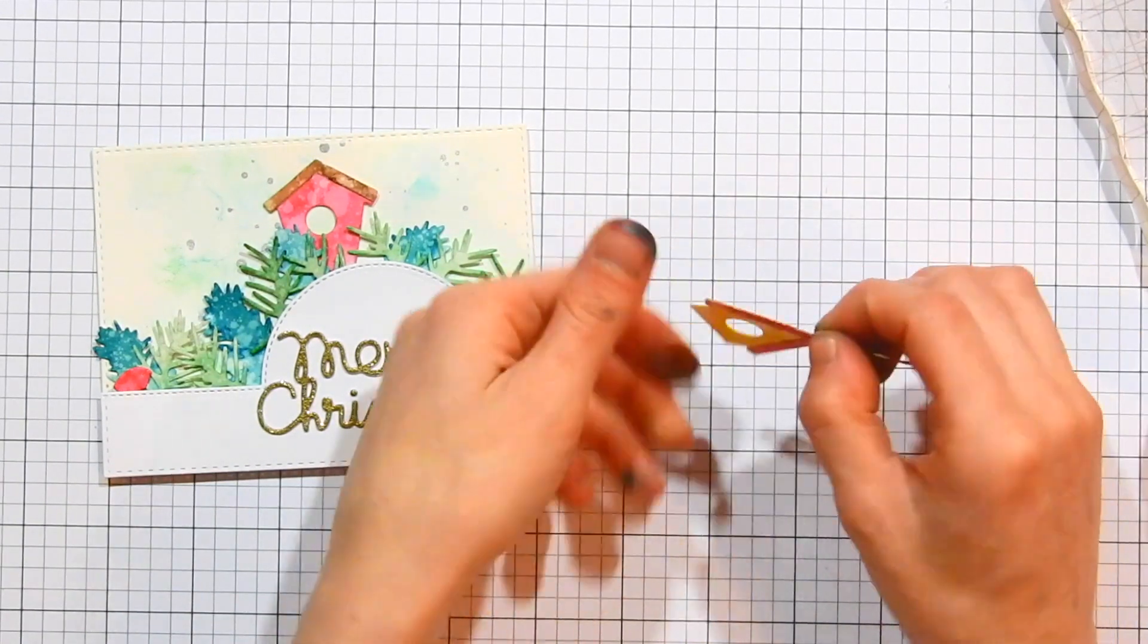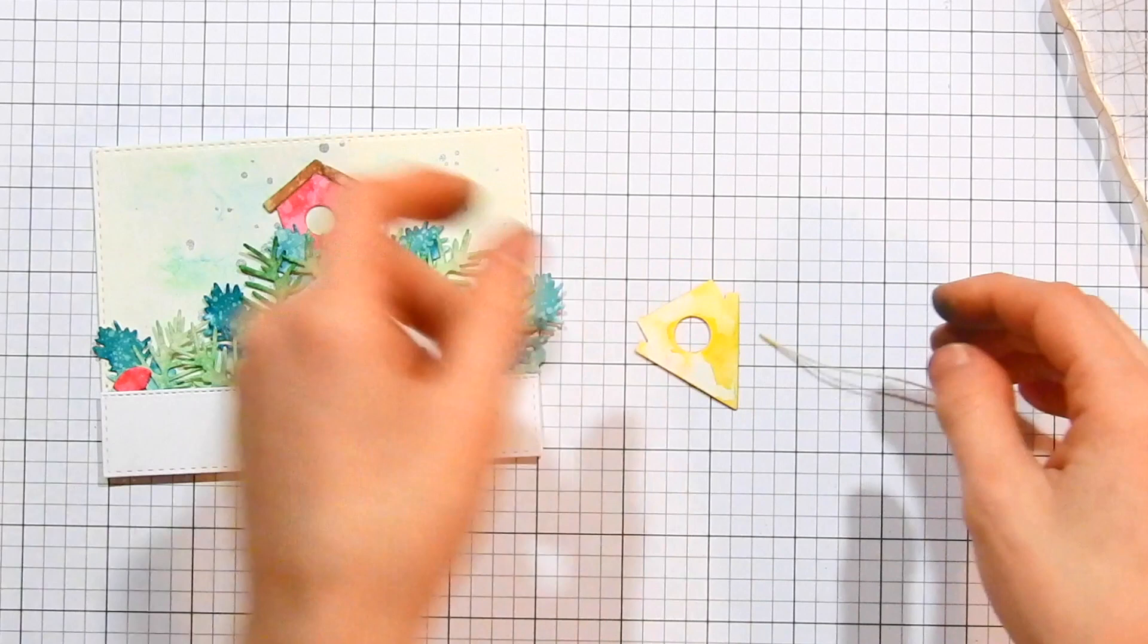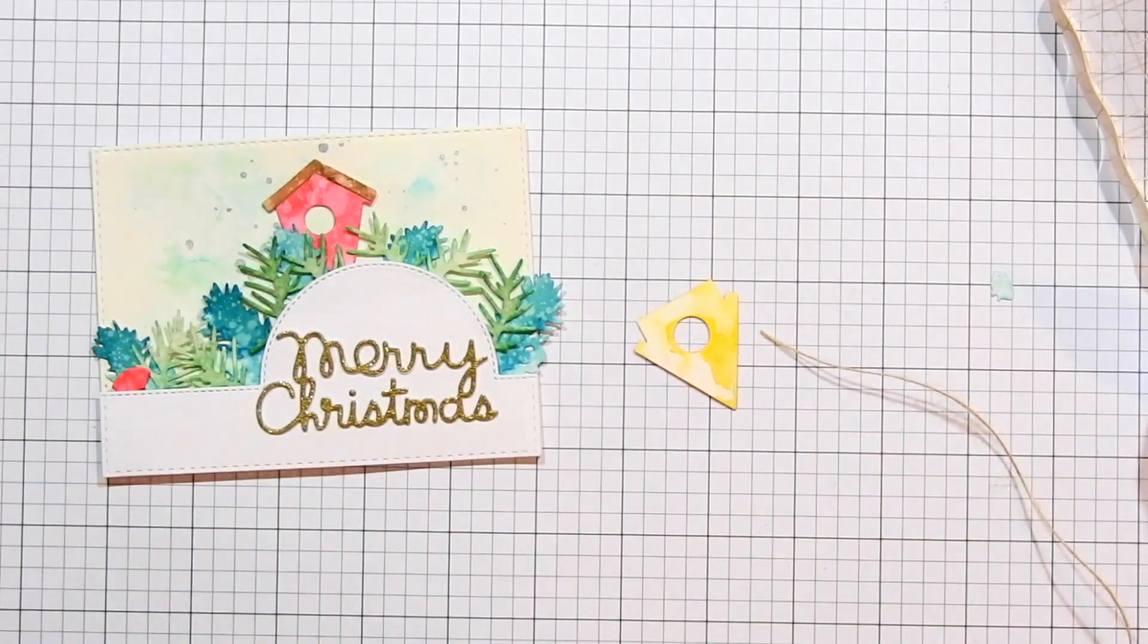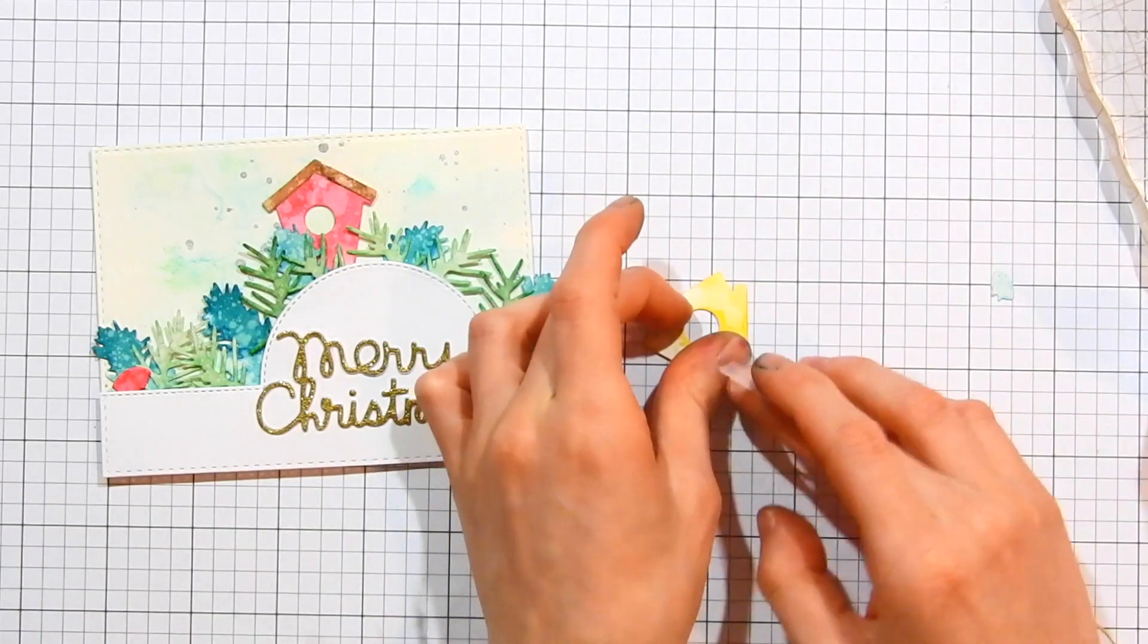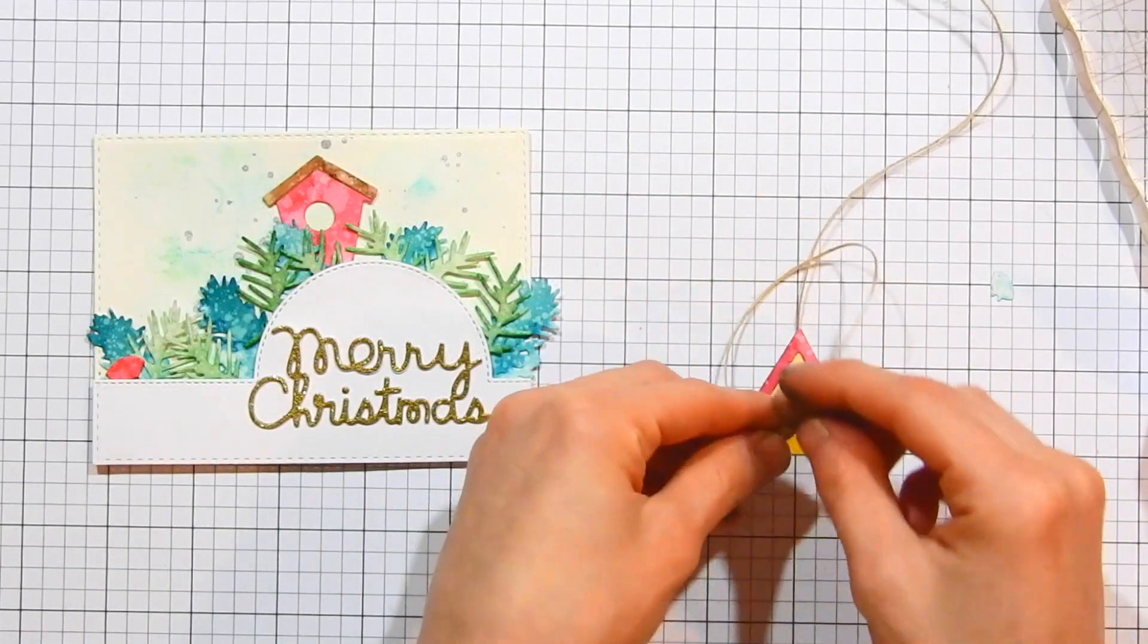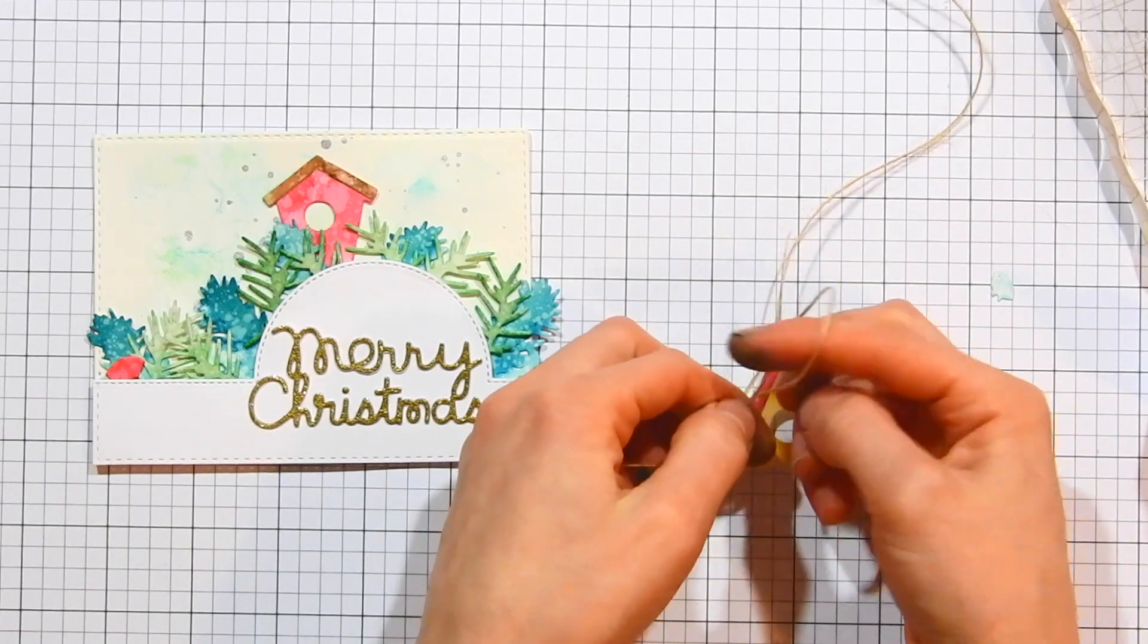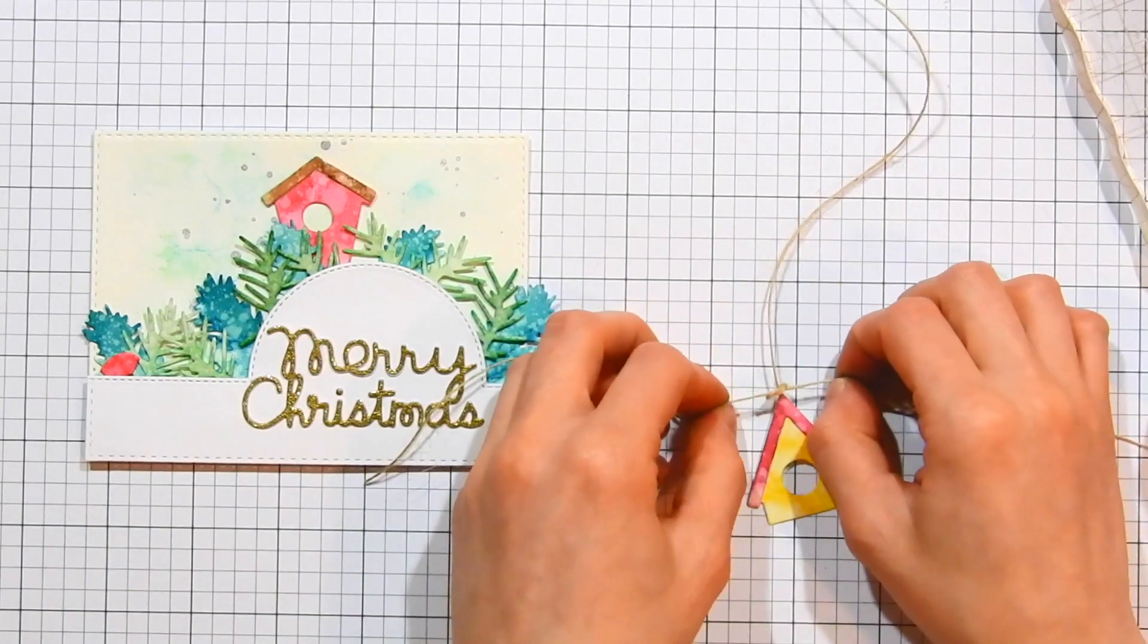Now I'm going to add some twine to the backside of my birdhouses to make them look like they're hanging off the top of my card. I'm taking the hemp and putting it on the backside of the houses, and then I'm going to take a piece of scotch tape and attach it down to the backside. I'm now taking a second strand of that twine and tying a little bow at the top portion of this birdhouse.